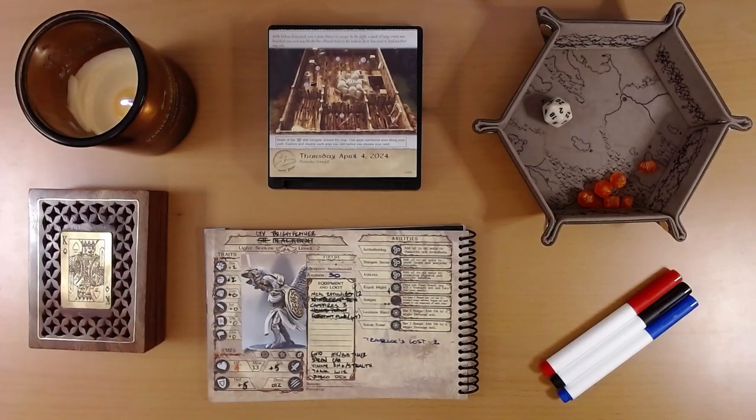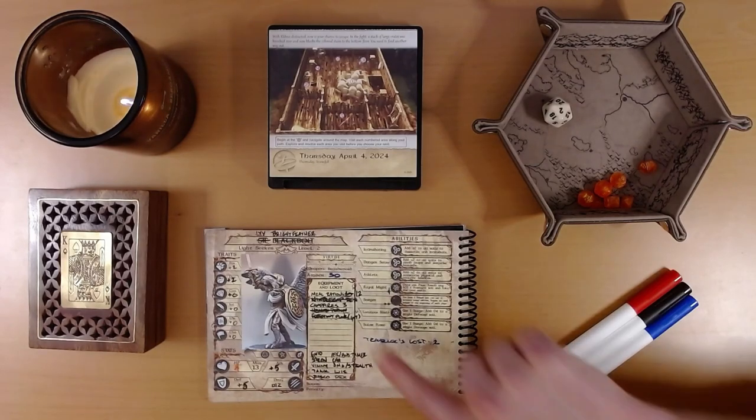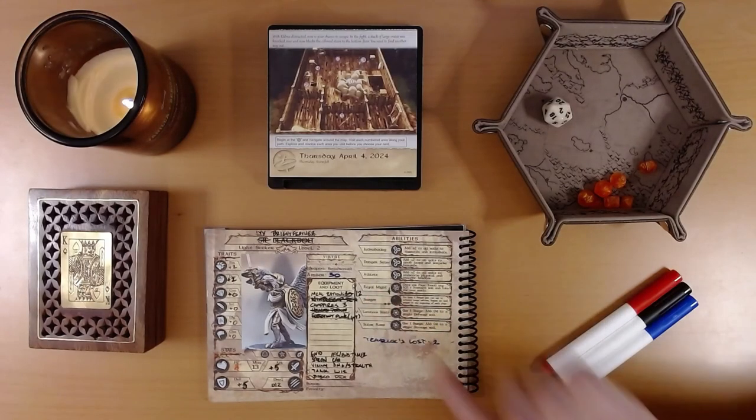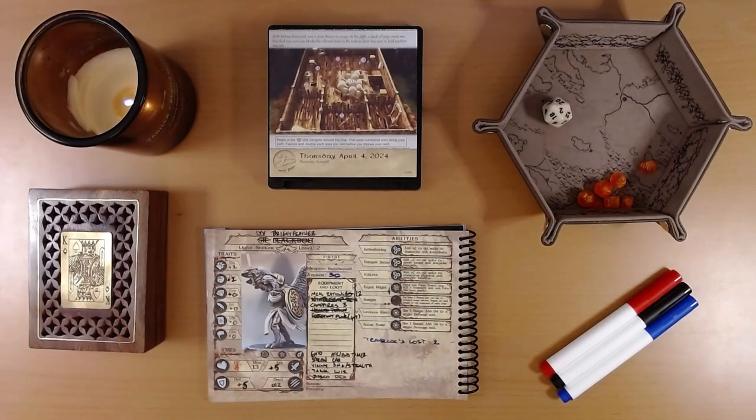Yesterday, while Eldris gathers his strength for another attack, Ivy and Party were supposed to be fleeing. Instead, we explored the barn, of course. We found a few amber. We're up to 30. And some meal rations. We're now at 12. And some more ways to get hurt. So, we're at 8 health of 13.